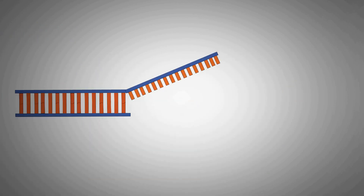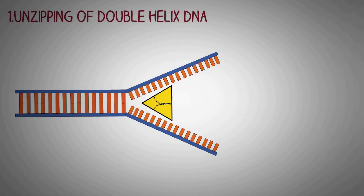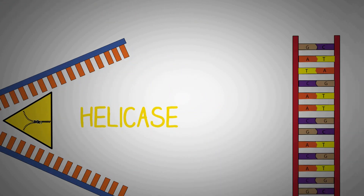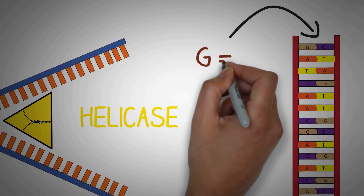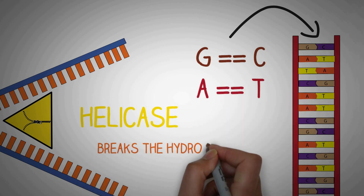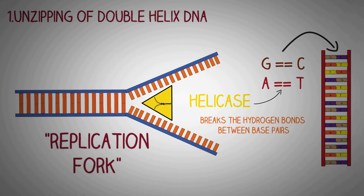For the process of DNA replication to begin, it is important for the two strands of the DNA to open up. This job is done by the enzyme helicase, which is also known as the unzipping enzyme. Helicase performs this function by acting on the hydrogen bonds present between the base pairs of the opposite DNA strands, breaking these bonds so that the double helix opens up, leading to the creation of a structure known as the replication fork.